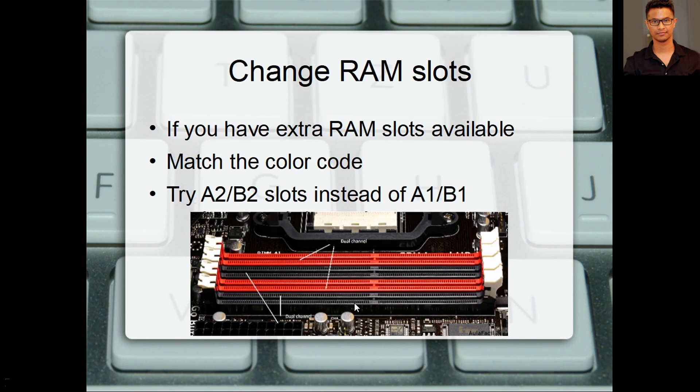That actually happened to me. I had trouble with my ASRock B450M motherboard — it was failing at 3200MHz. So what I did was change the slots from A1/B1 to A2/B2, and I was able to run at 3200MHz with no issue. I did not have to reduce the speed at all.